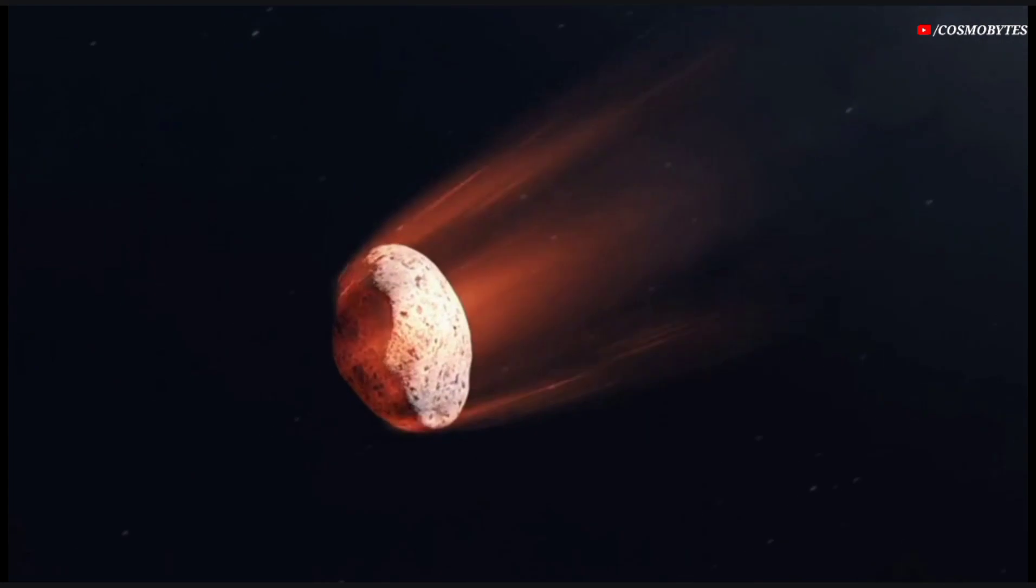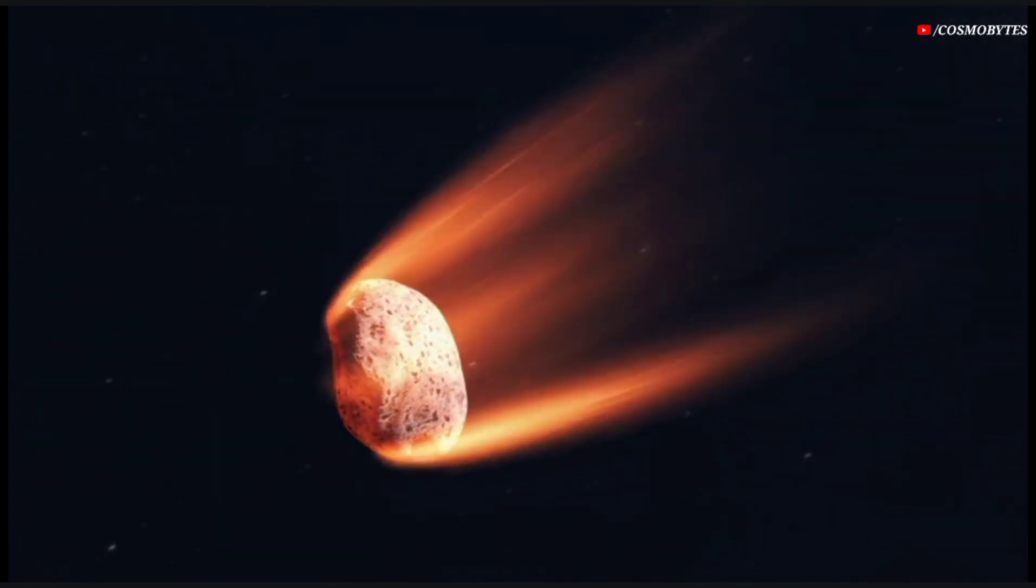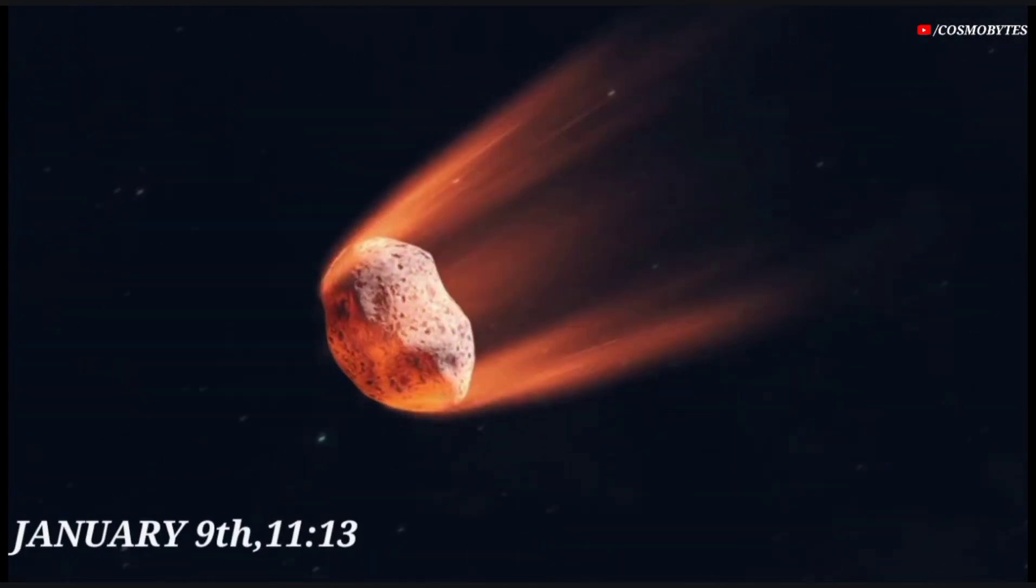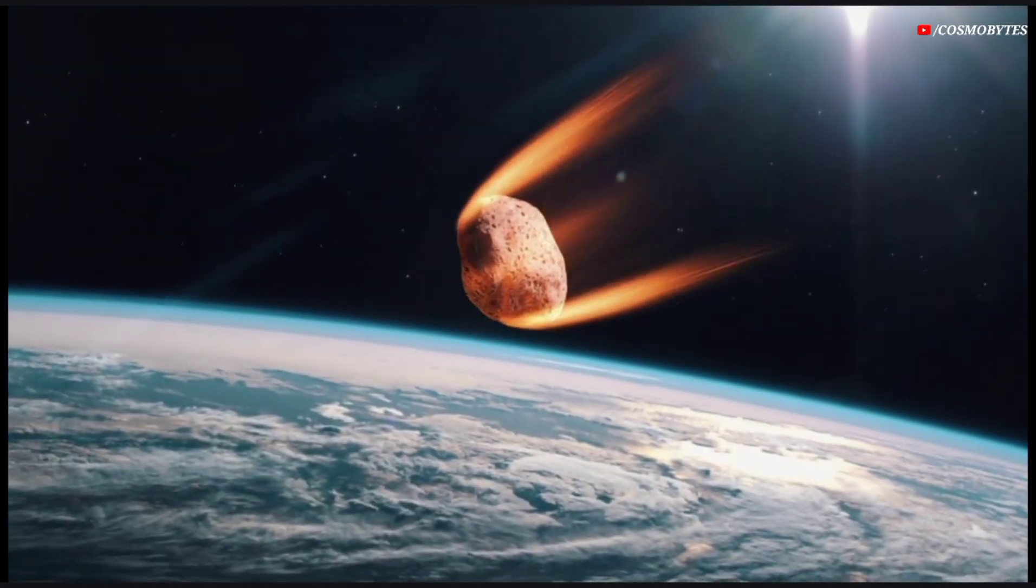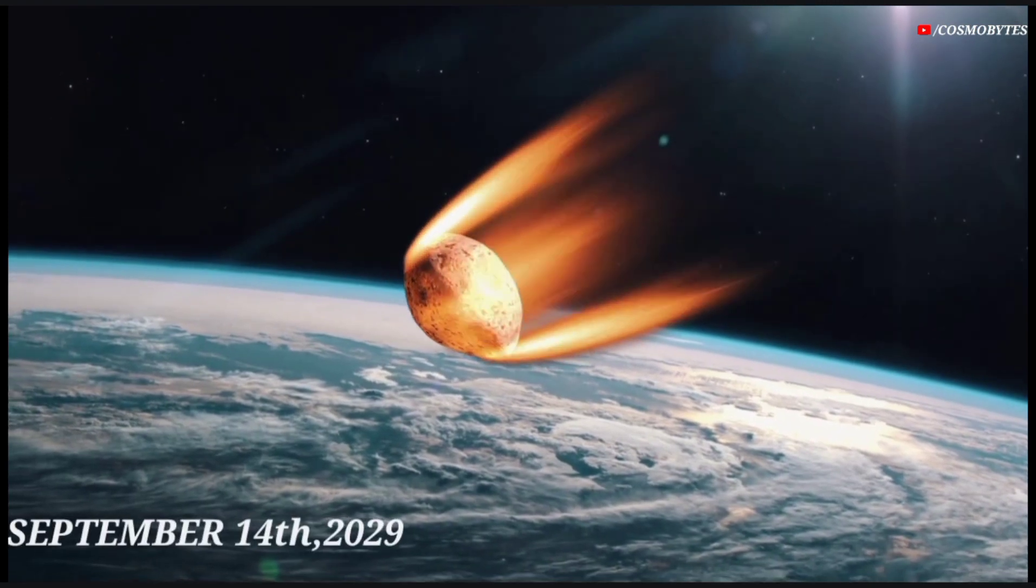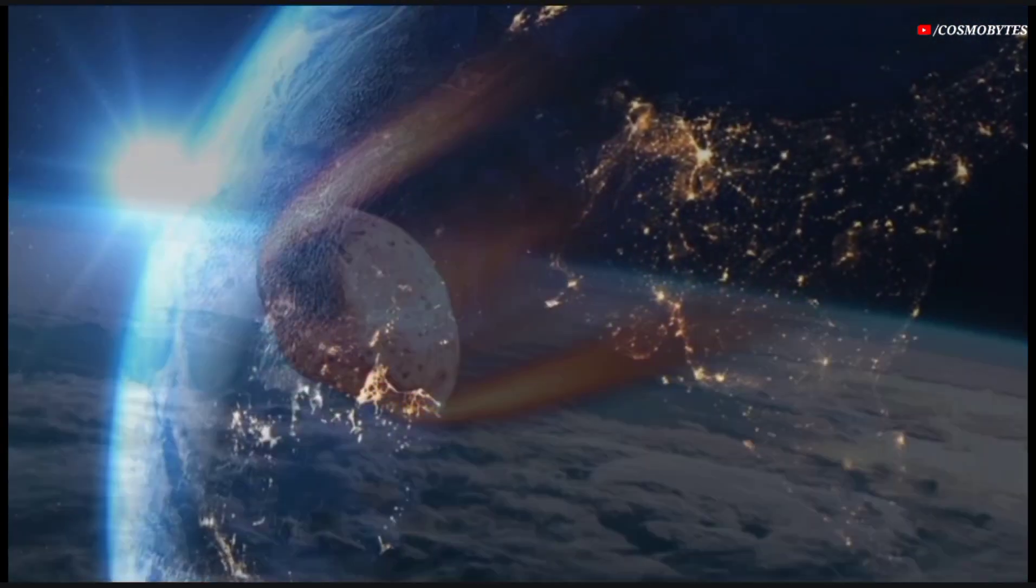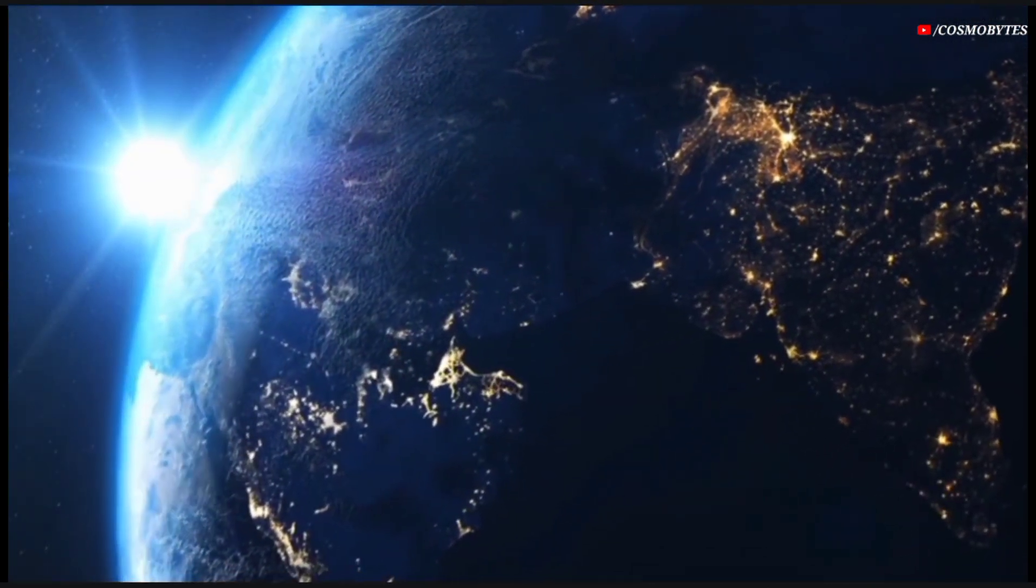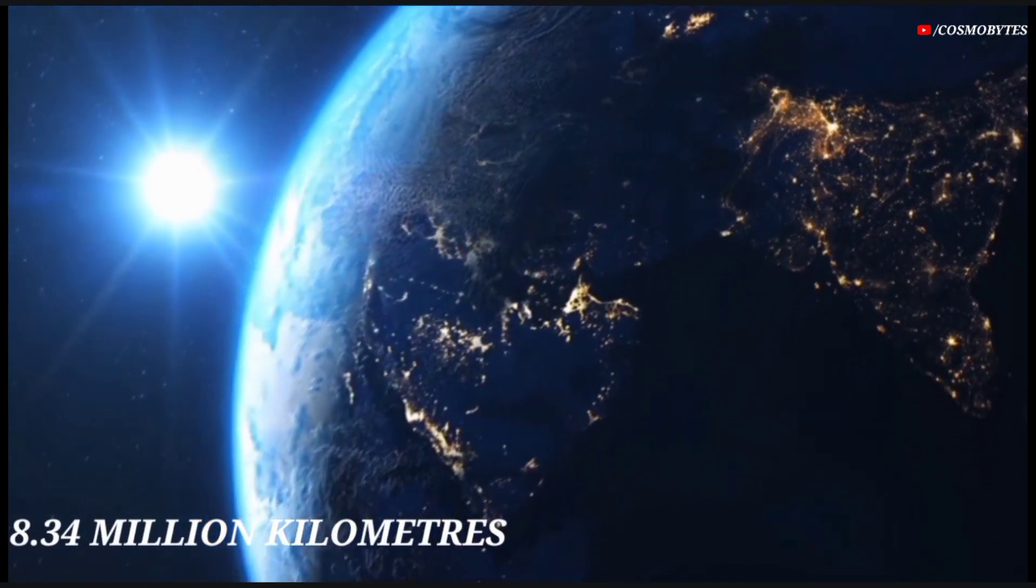This year, the asteroid TL 2021 will pass past Earth on January 9 at 11:13, and the next close approach of asteroid TL 2021 to our planet will happen on September 14, 2029. On that day, its distance to Earth will be 8.34 million kilometers.